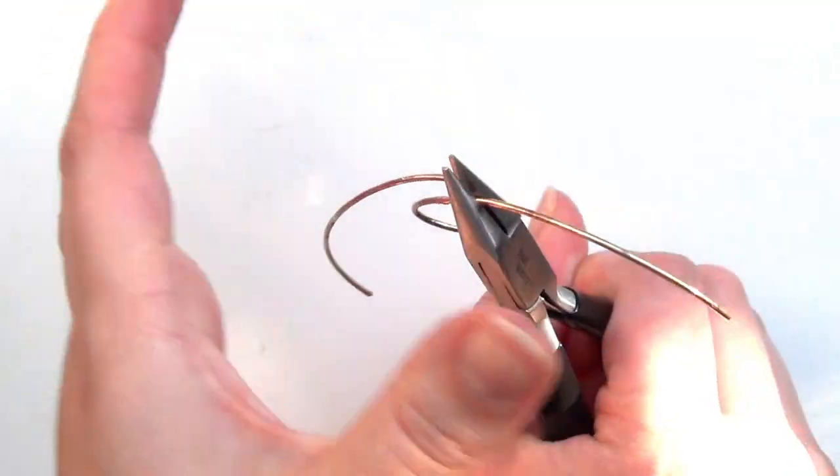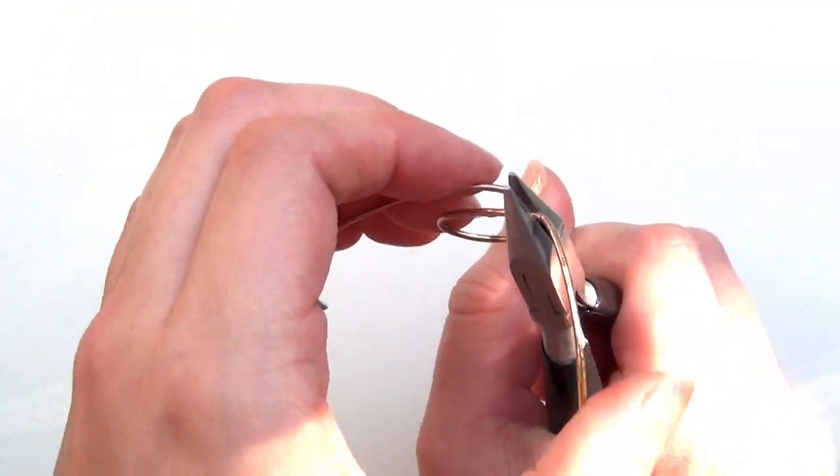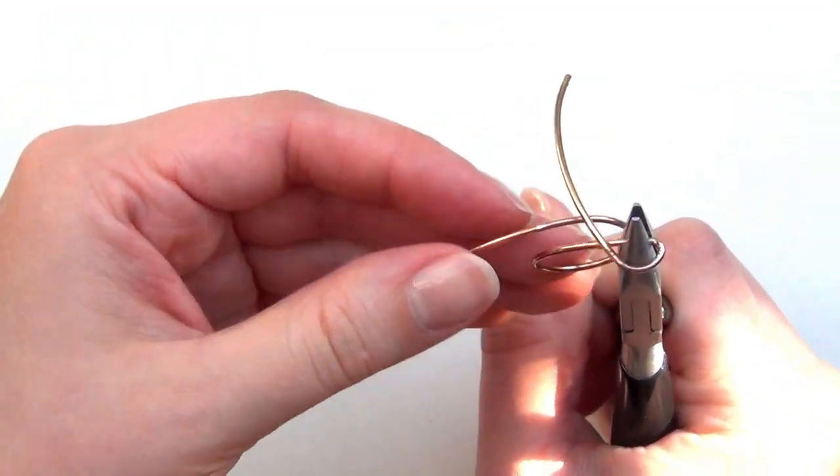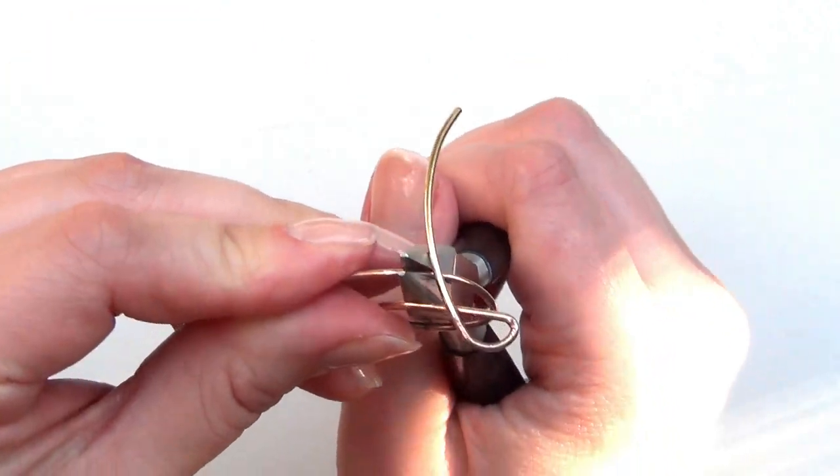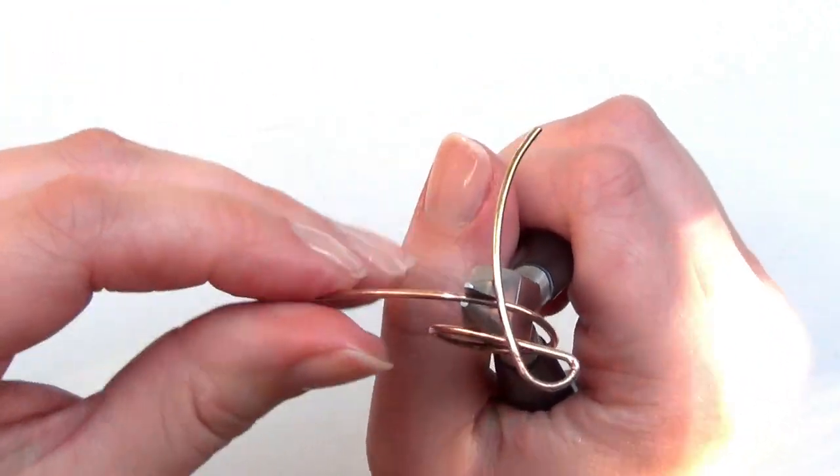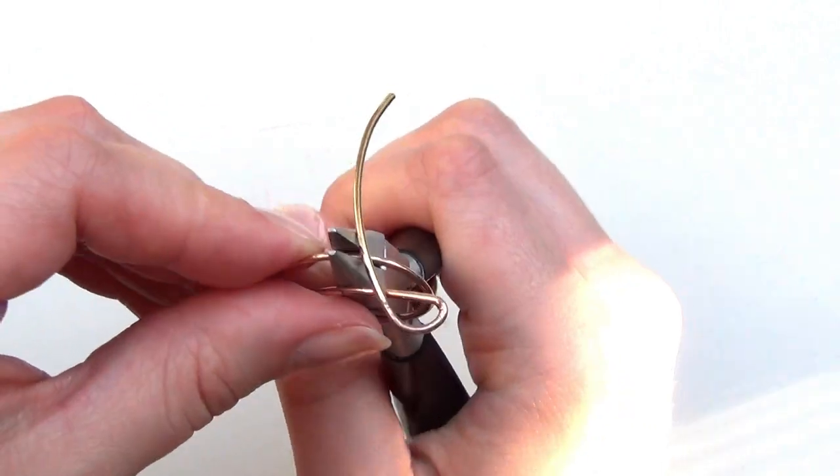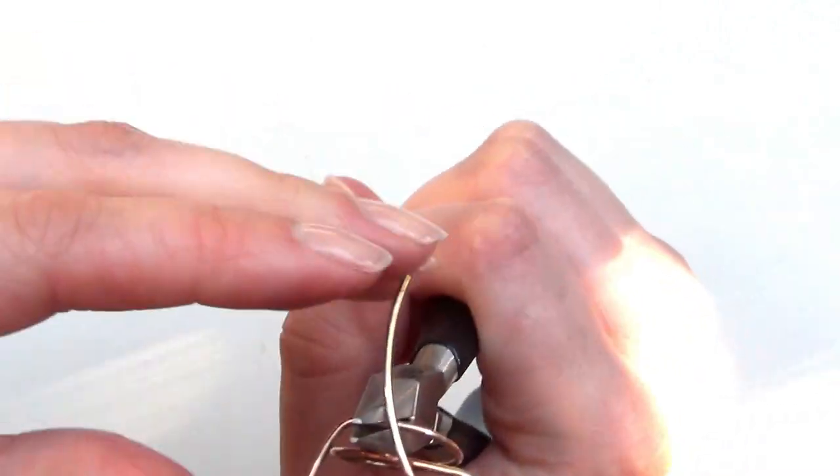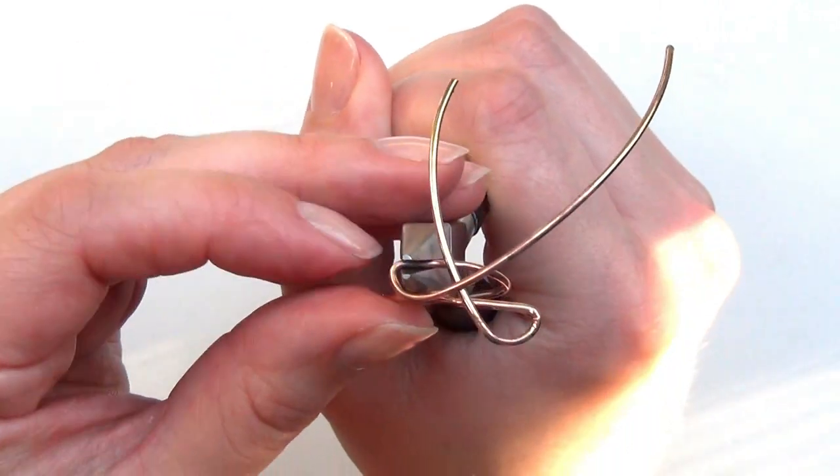Then grab the other side of the wire and bend it up and over in the same direction, and that's the other loop of the bow.